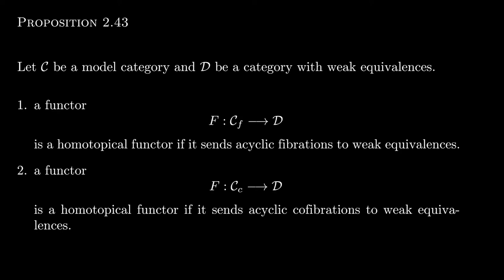We will prove this, but one of our steps will use what is called the factorization lemma, whose statement and proof we will cover later. We will prove the case for CF; the other case is dual. Suppose that acyclic fibrations are sent to weak equivalences. Now pick a random weak equivalence in CF and we want to show that it is sent to a weak equivalence.